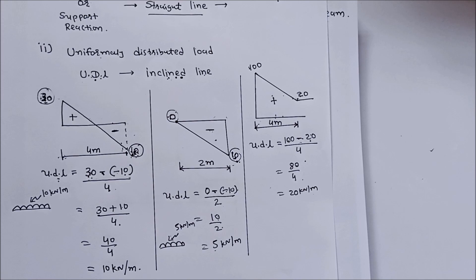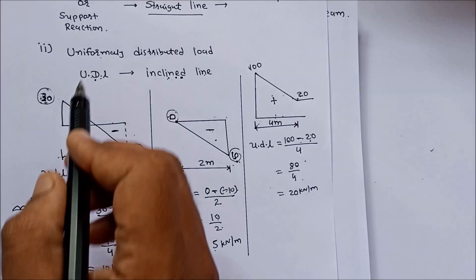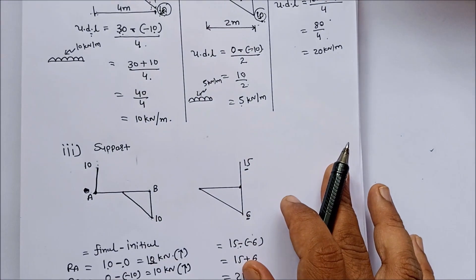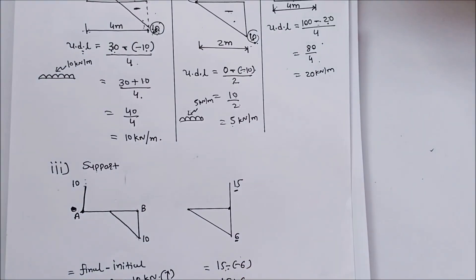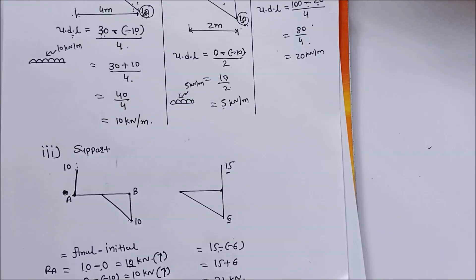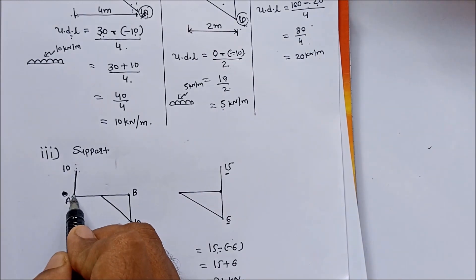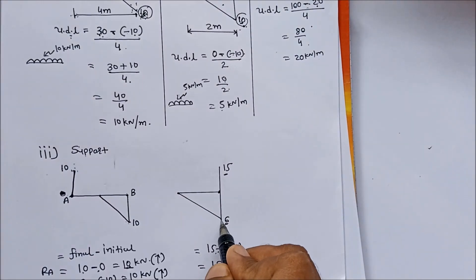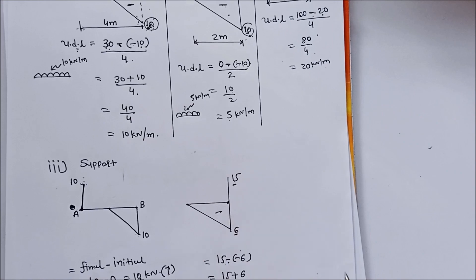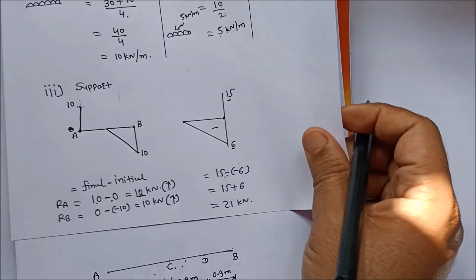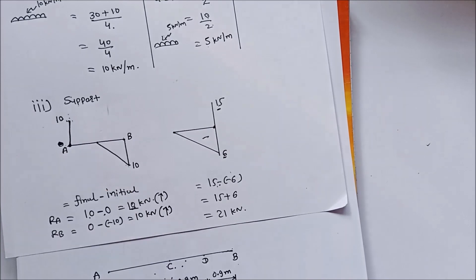So if there is an inclined line in the shear force diagram, there is always a uniformly distributed load. Third point: how do we identify whether a support is provided? If there is a sudden rise in the shear force diagram, there is always the possibility of a support reaction. For support reaction or point load, always remember the equation: final minus initial.